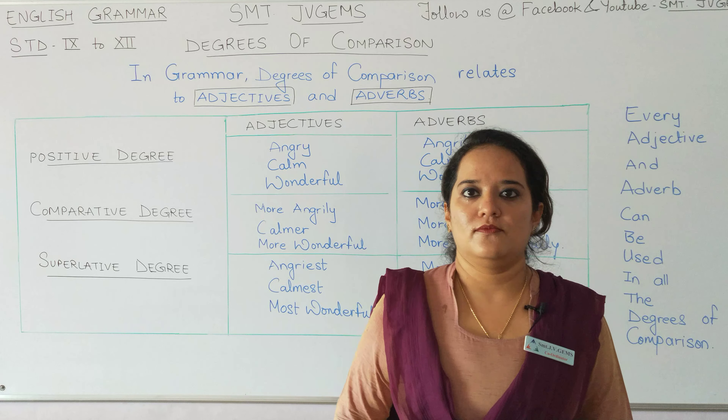This is the structure and this is the difference between the adjectives and adverbs which are used in comparison. Every adjective and every adverb can be used in all the degrees of comparison. It is not like that we cannot use any adjective or any adverb in any of these. We can use all these adverbs and adjectives in all the three degrees of comparison.